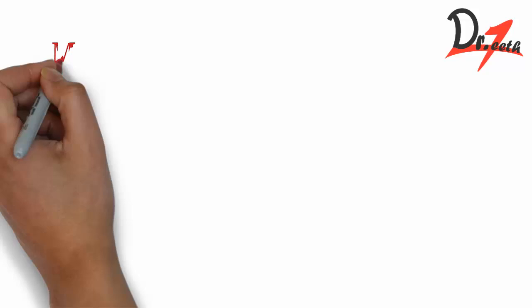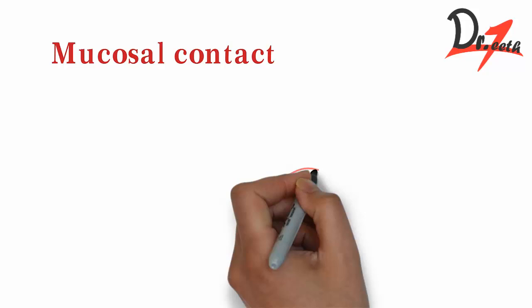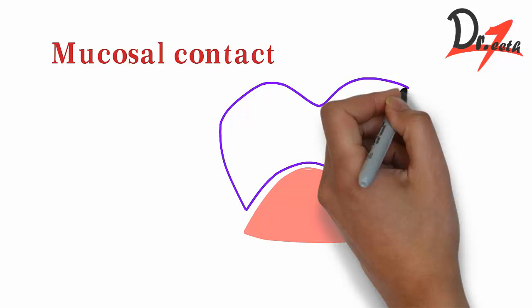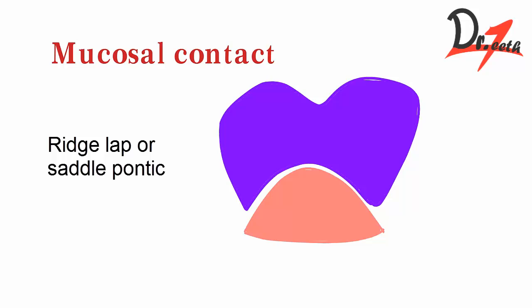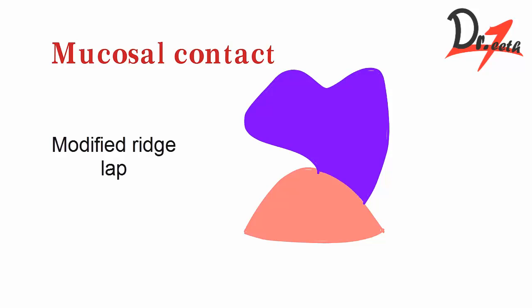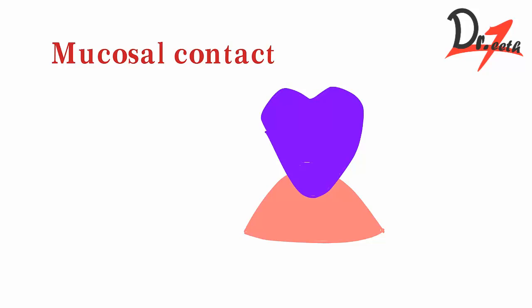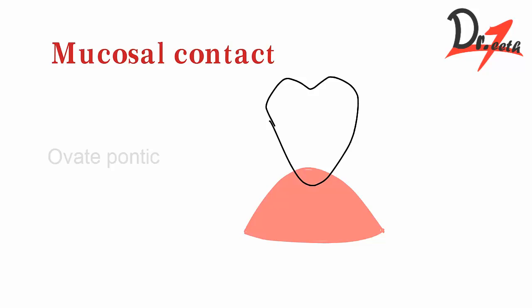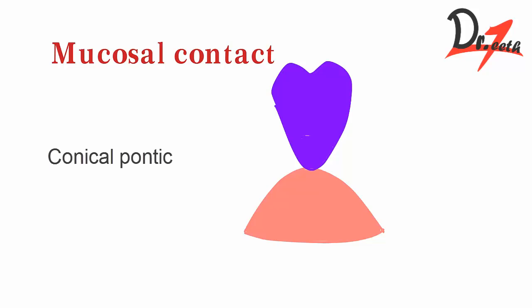Based on mucosal contact, it is of four types. If we draw a ridge with a pontic above it, the ridge lap or saddle pontic covers the entire ridge. The modified ridge lap contacts the ridge on one side only and is generally given in anterior teeth where esthetic requirements are very high. The ovate pontic is confined within the ridge only and is given in fresh extraction sockets. The conical pontic makes just one point contact with the ridge and is indicated in knife-edged posterior ridges or molar teeth.